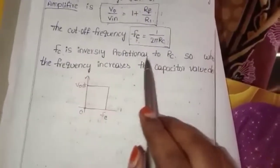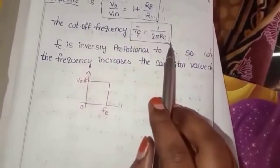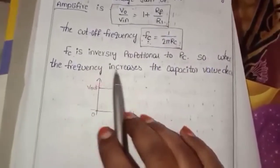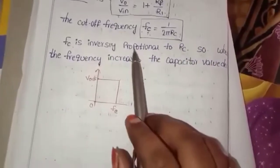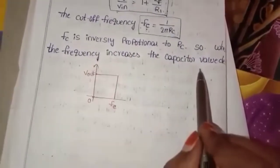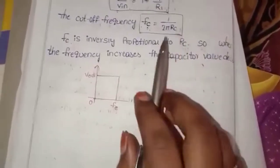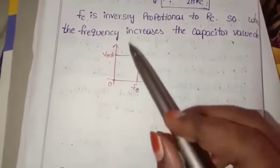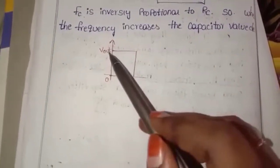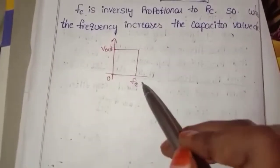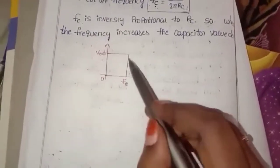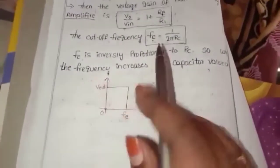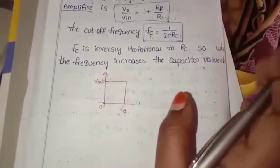Fc is inversely proportional to RC. When the frequency increases, the capacitor value decreases. The output waveform shows the cutoff region. This completes the first order low pass filter. In the next video, we will cover the high pass filter.